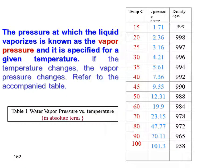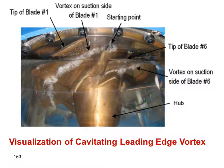This table shows the variation of water density with temperature, as well as vapor pressure in pascals. As temperature increases, vapor pressure increases and density decreases slightly — relevant for water used as the working fluid in turbines.